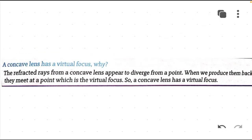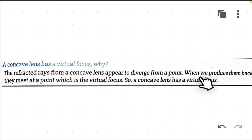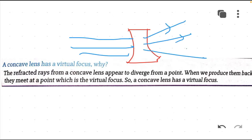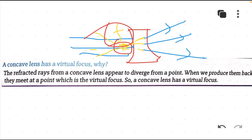Next question: a concave lens has a virtual focus — why? The answer is that the refracted rays from a concave lens appear to diverge from a single point; when we produce them back, they meet at a point which is the virtual focus. So a concave lens has a virtual focus. When parallel rays of light pass through this concave lens, the lens diverges all rays, and when these refracted rays are extended backwards, they all meet at a single point — but this focus is a virtual focus.